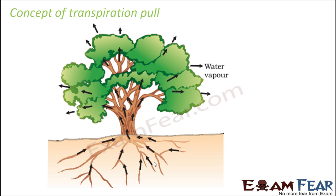We will try to understand what causes that upward pull — how a drop of water being lost at the top creates a pull at such great heights. Water moves up in a column; it moves like how water moves in a river, like it is flowing through a tube-like structure, all molecules moving together. That is how water moves due to transpiration pull.